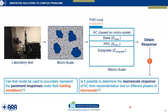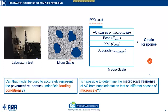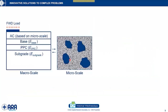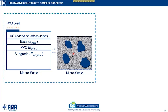Instead of performing different tests, we can perform a single test to determine the phase properties of asphalt concrete, and use those phase properties in a multi-scale model to obtain the pavement response. The question becomes: how good is the predicted response compared to what we observe in the field? To answer that, we develop a multi-scale model with an actual pavement macro-scale model where we apply the load, and a micro model where we define individual phase properties, using the finite element method — hence the name multi-scale finite element model.